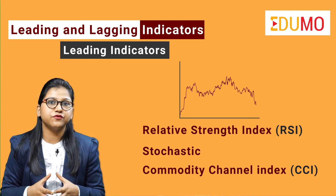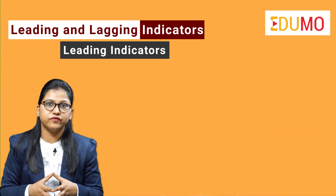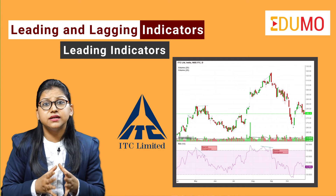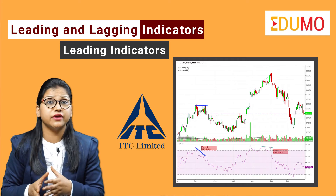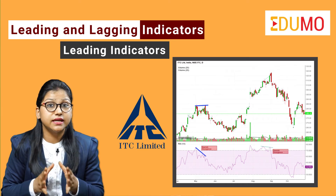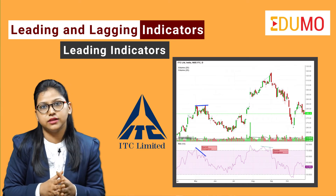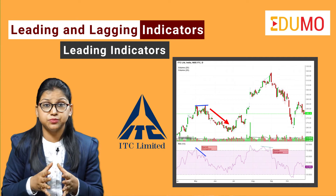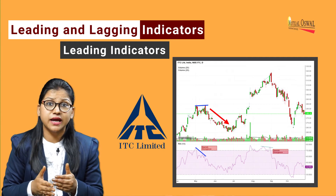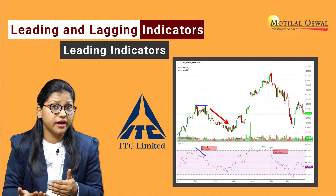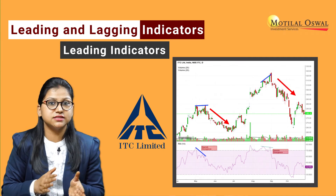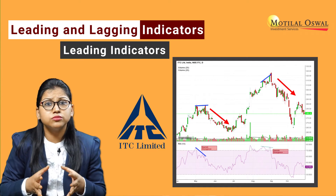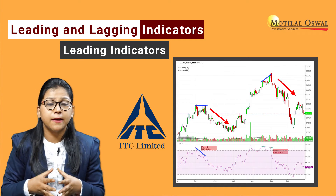We can see from the chart of ITC Limited here how RSI made a bearish divergence, indicating a fall in prices. Bearish divergence is made when the prices form higher highs and the RSI, that is the Relative Strength Index, forms lower lows below.